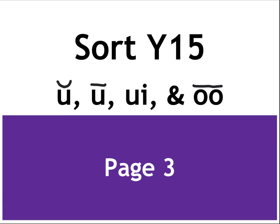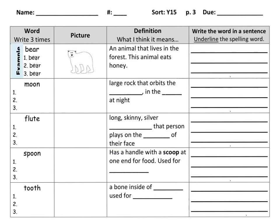At Y15, page 3, you're looking at the sounds a, u, oo, and oo. Before you start writing down all these words three times, make sure your name, number, and the due date tomorrow is on the top of this page.